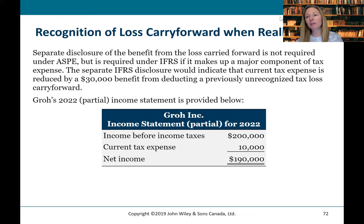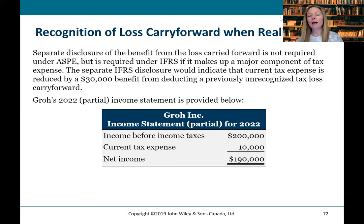Under IFRS, we would need to disclose the benefit of the loss carry forward if it's significant. ASPE would not require it. The income statement simply shows income before income taxes, current tax expense of $10,000, and net income of $190,000 — no specific disclosure about the tax loss carry forward. It's simply flushed through current tax expense, which gives an interesting, very low effective tax rate. One explanation for a low effective tax rate is tax loss carry forwards that were not recognized when incurred but were recognized when taxable income was realized.